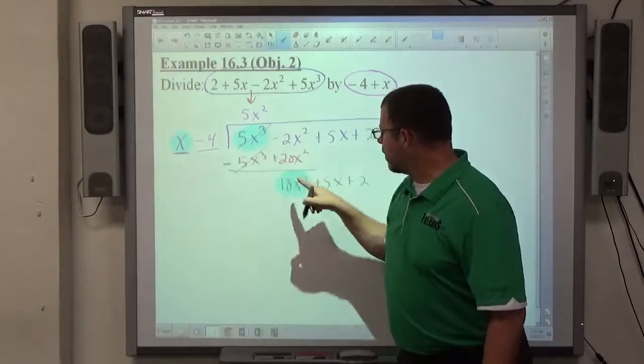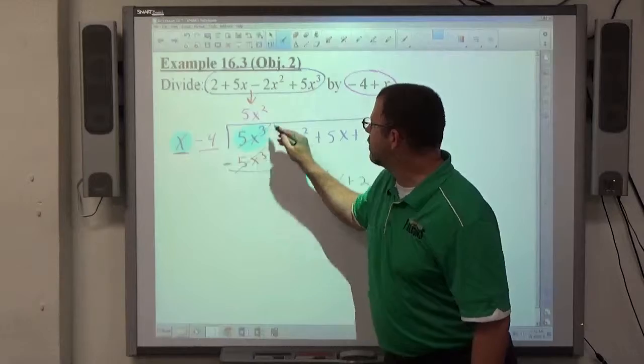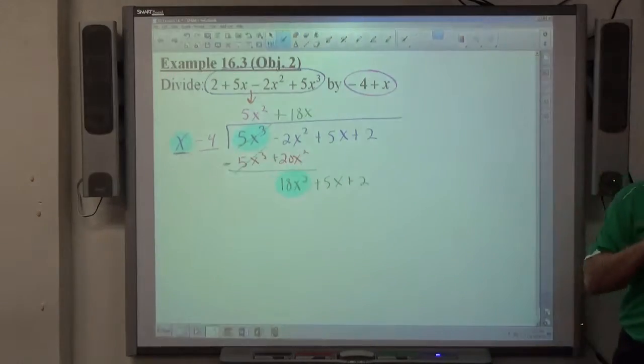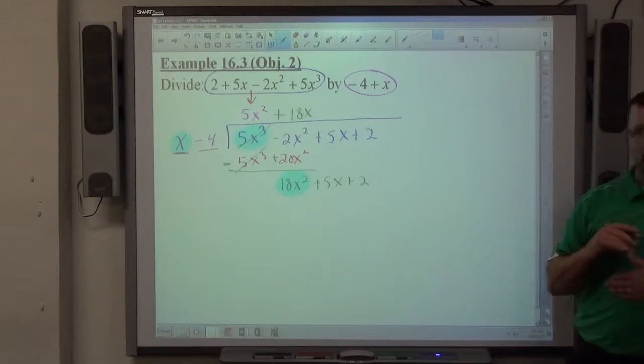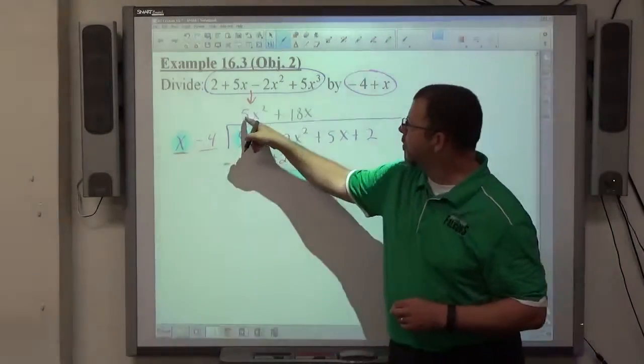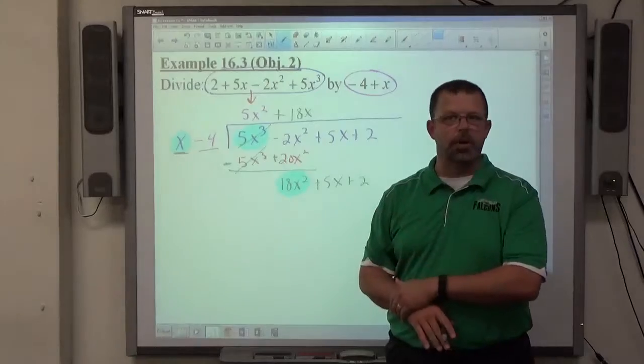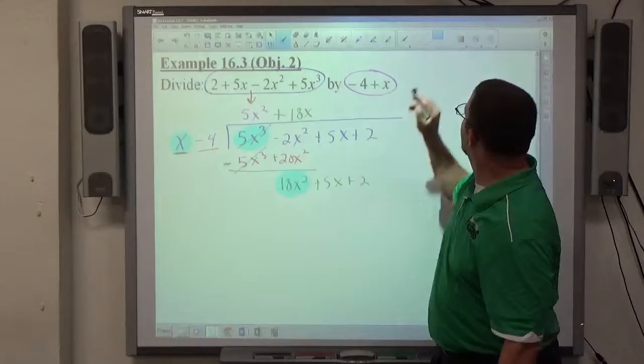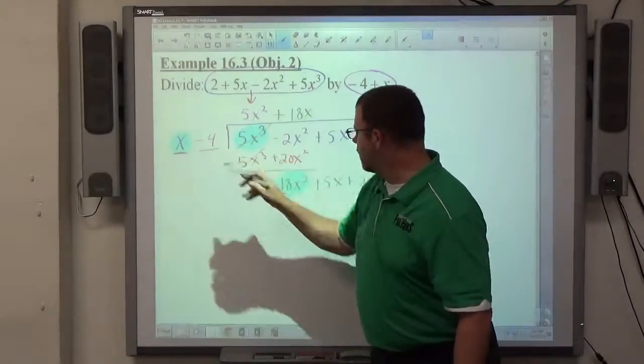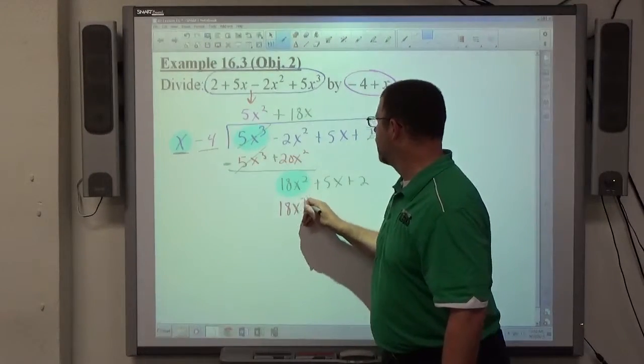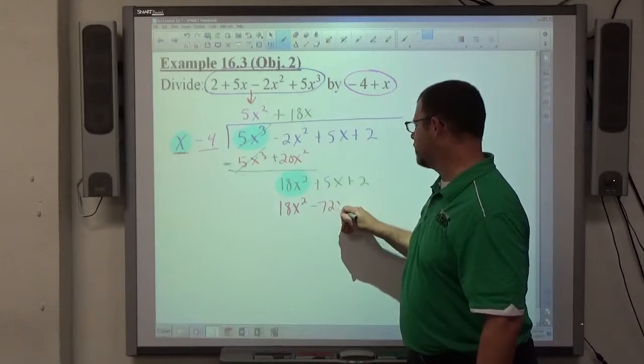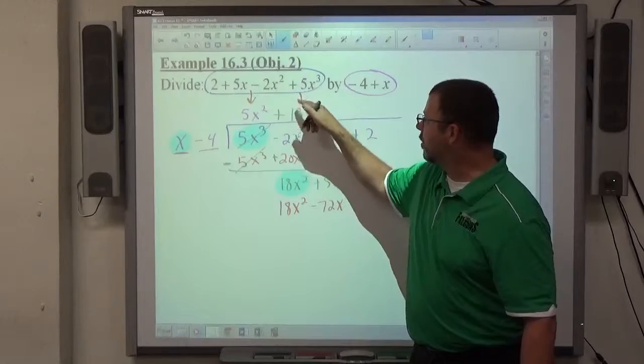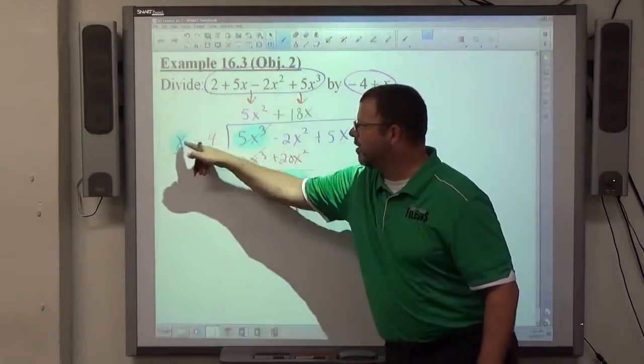Leading term divided by leading term. Positive 18x squared divided by positive x is positive 18x. Again, you have to put pluses and minuses up on the answer. So positive, put a plus sign. I didn't need a plus sign on the first one because it's the first term, but expression is understood to be positive. 18x is not understood to be positive, so we have to put a plus sign. Multiply. 18x times x is 18x squared. 18x times negative 4 is negative 72x. Multiply the product, or the answer here, times both pieces of the divisor.